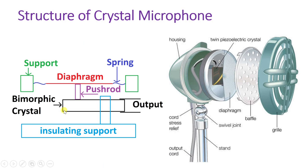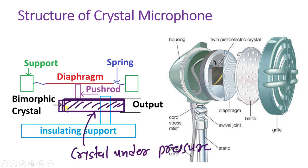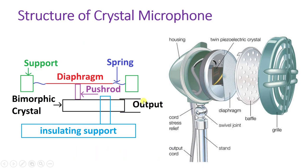The push rod pushes pressure onto the bimorph crystal. Because of this pressure, we get an electrical output that is directly proportional to the pressure change on the crystal. The entire structure is supported by an insulating support. This is how the crystal microphone works — its operation is based on sound pressure.